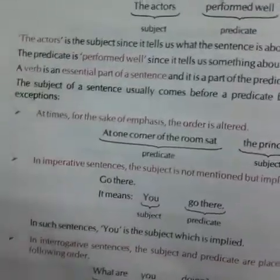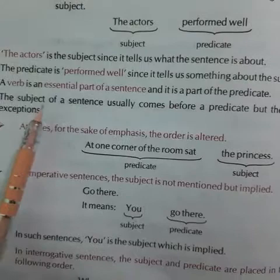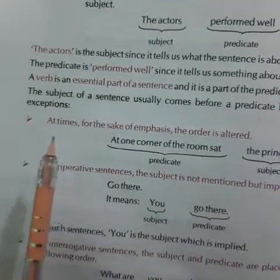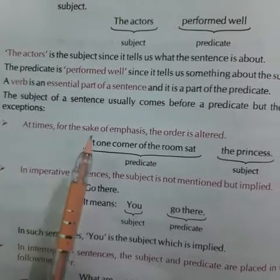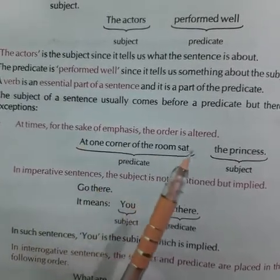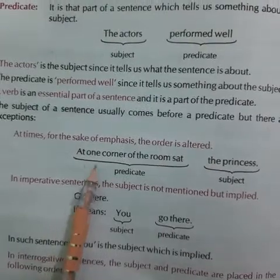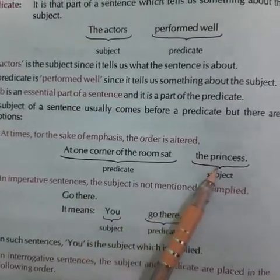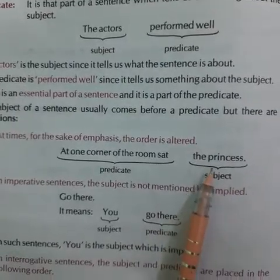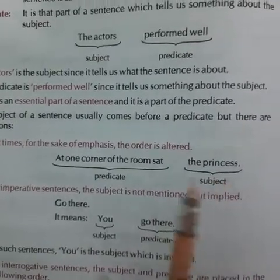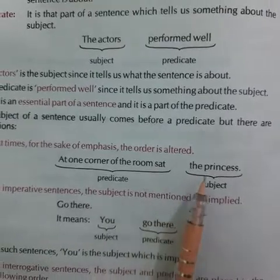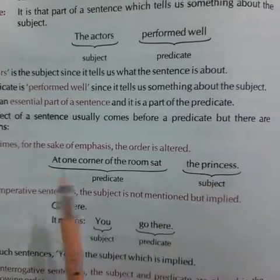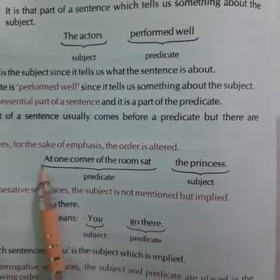The subject of a sentence usually comes before the predicate, but there are exceptions. At times, for the sake of emphasis, the order is altered. See the example: 'At one corner of the room sat the princess.' The princess is given at the end of the sentence, but we are talking about the princess. So princess is our subject and the remaining sentence is the predicate.